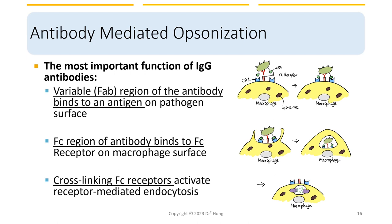Next is antibody-mediated opsonization, which we've looked at before during our talks on the complement system. One of the most important functions of IgG antibodies is to perform opsonization. The variable regions in the Fab fragment of the antibodies can bind to antigens on the pathogen surface, and the Fc regions — the stick part — of the antibodies can bind to the Fc receptors on macrophage surface. Cross-linking between Fc receptors can activate receptor-mediated endocytosis and facilitate breakdown of whole pathogens.